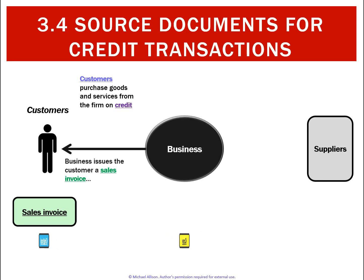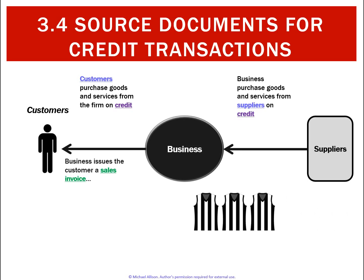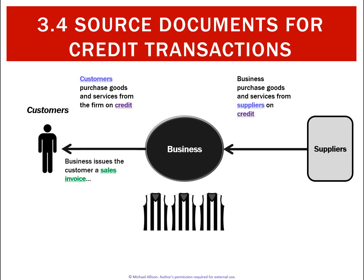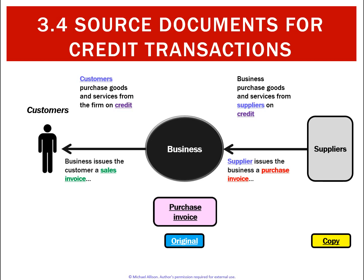The customer gets the original of that document and the business keeps a copy. However, the business will also buy goods on credit from suppliers. Once the supplier gives the goods without payment on the day, they will issue what's called a purchase invoice. In this case, the business is the one purchasing, so we call that a purchase invoice — the business has the original and the supplier keeps a copy.